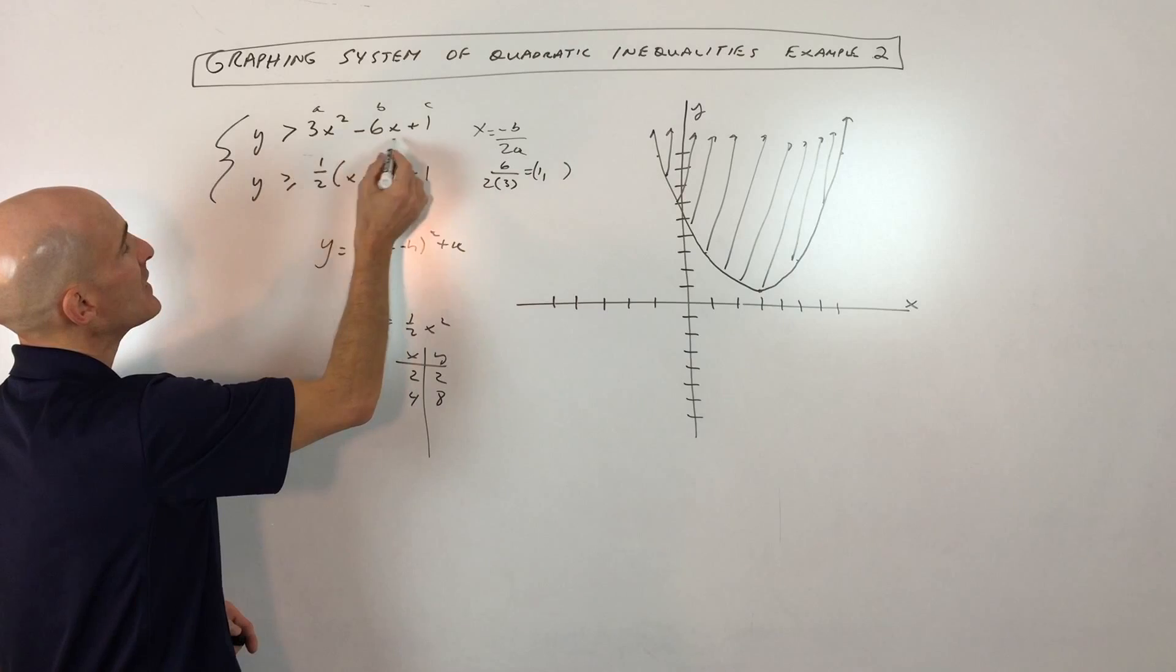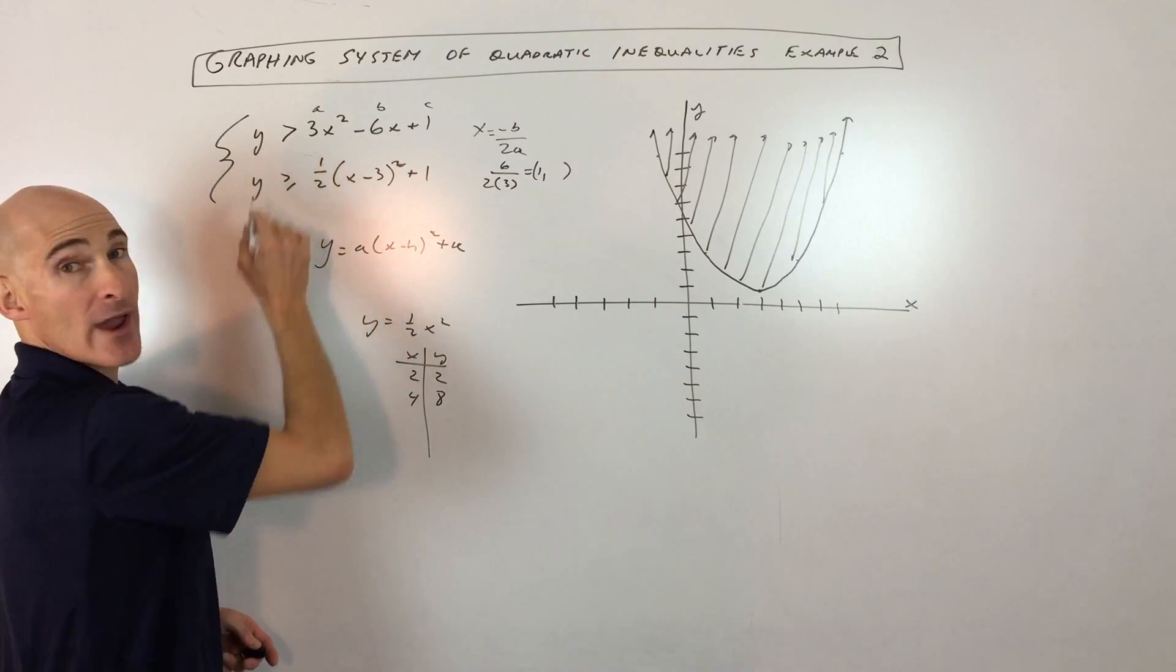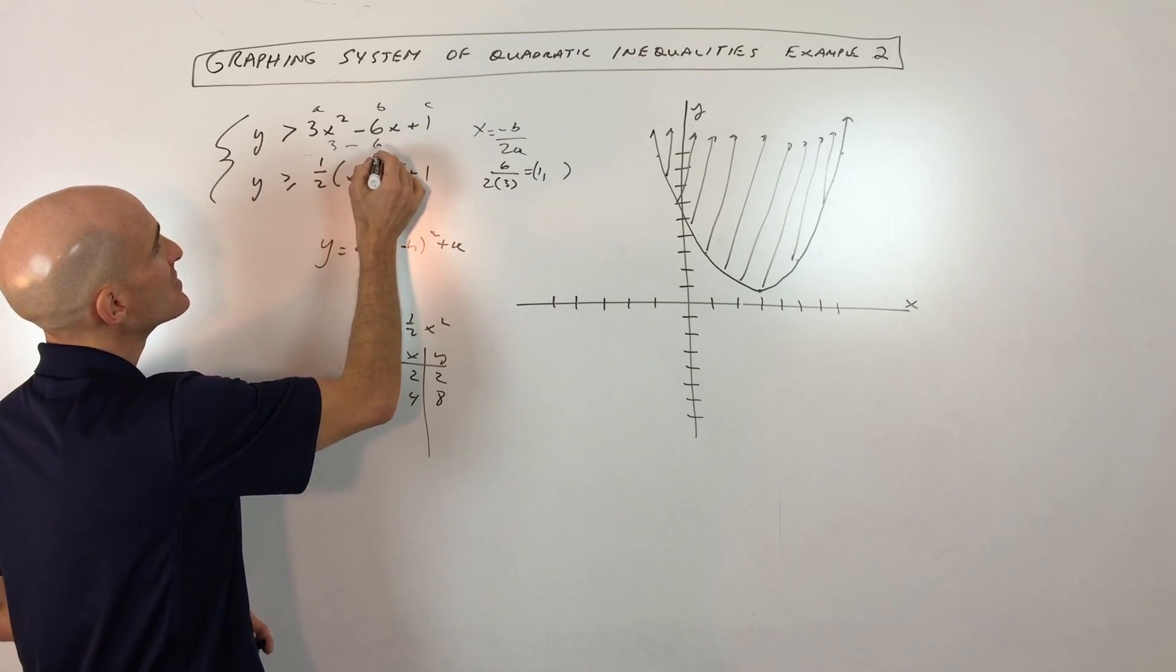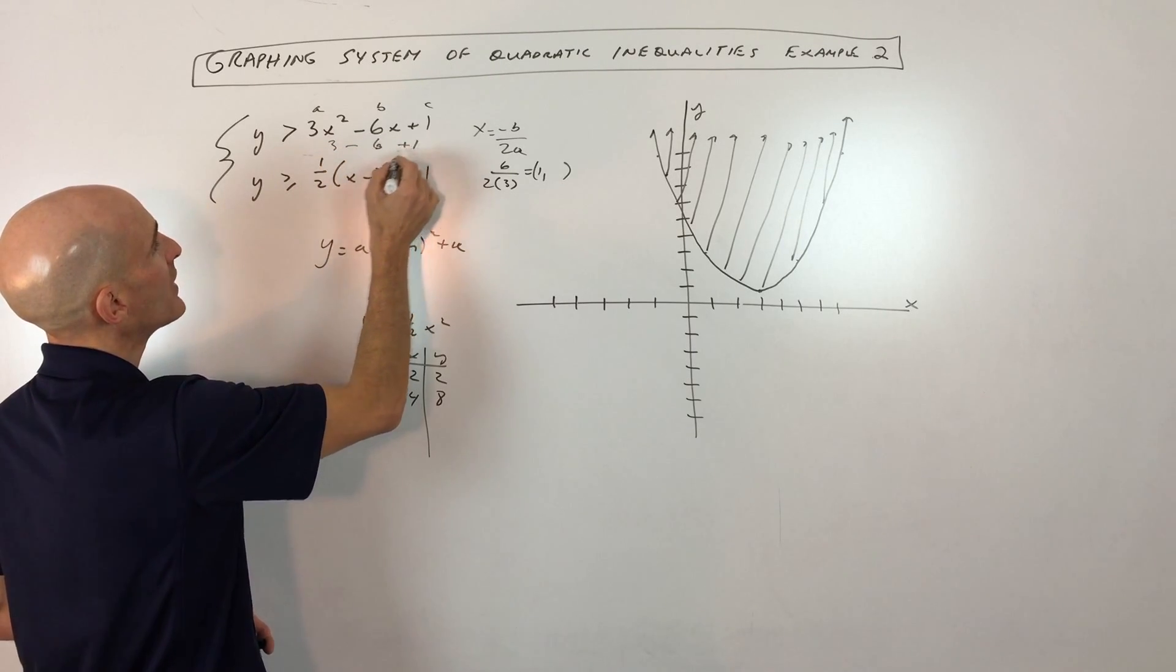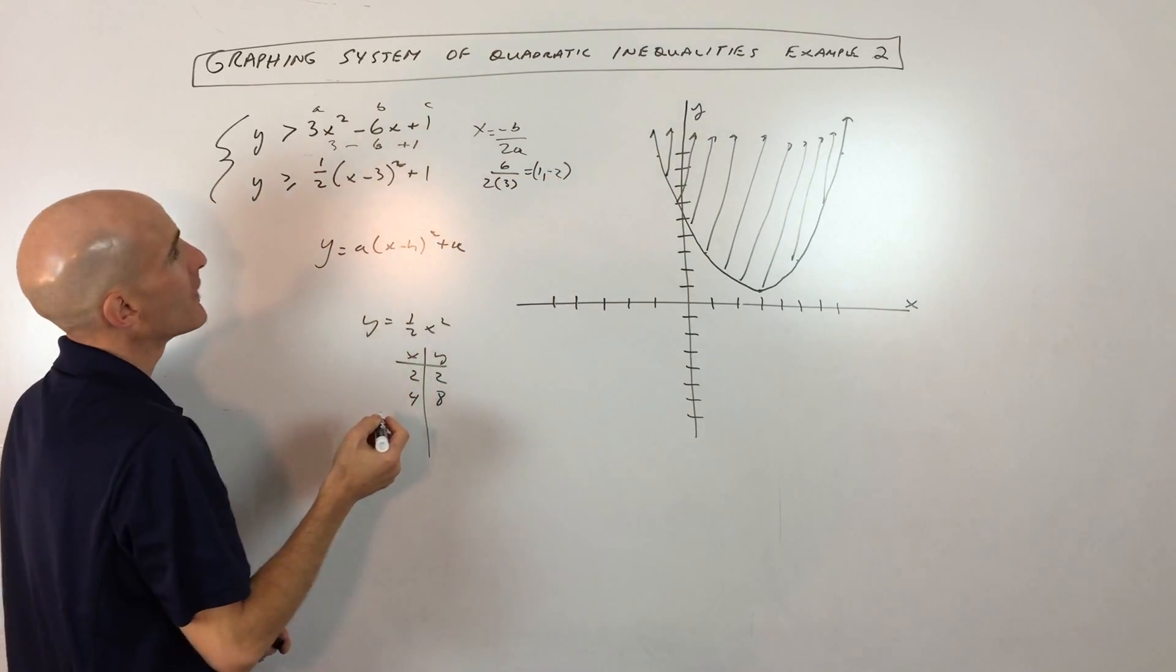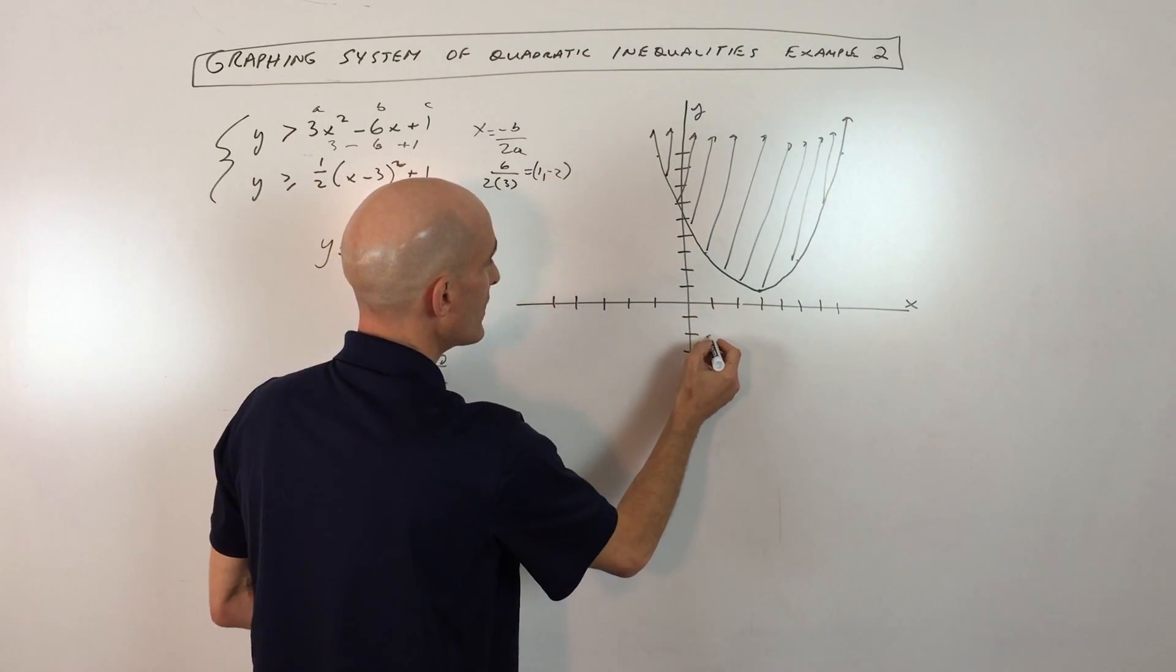Now, if we put 1 back in for x, we can solve for the y-coordinate of the vertex. So that's going to be 1 squared is 1 times 3 is 3 minus 6 times 1 is just negative 6, plus 1. So that's negative 3 plus 1 is negative 2. So it looks like our vertex here is at 1, negative 2.